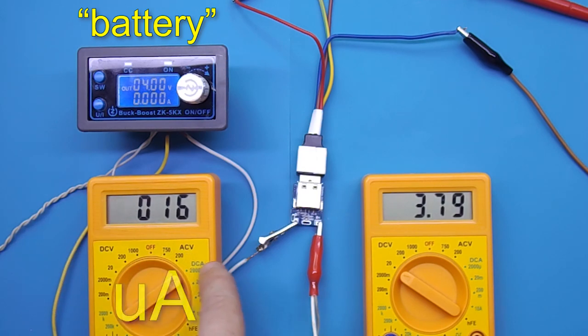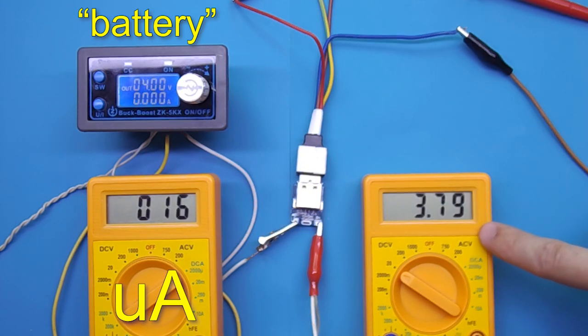This multimeter shows the current consumed by the converter. And the second multimeter shows the outgoing voltage from the converter.